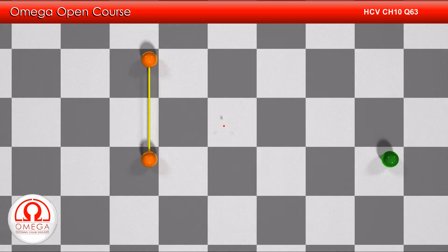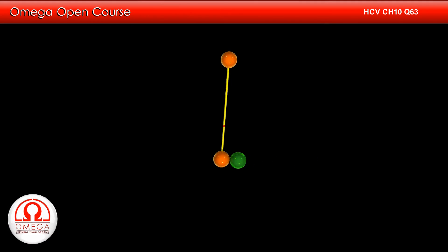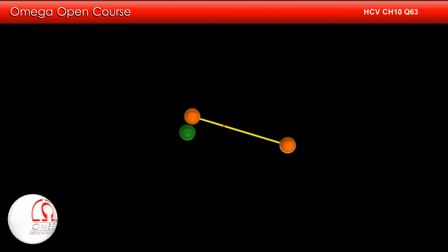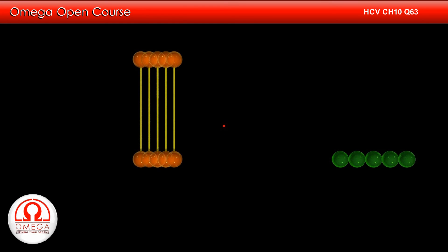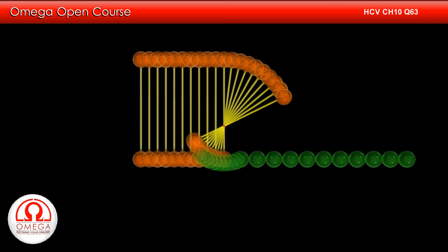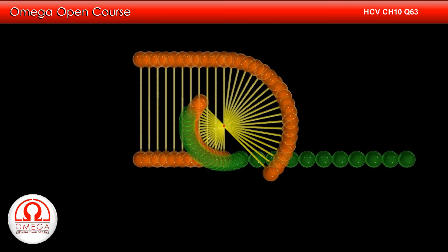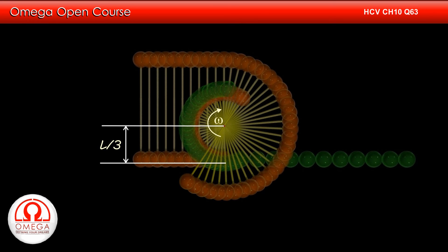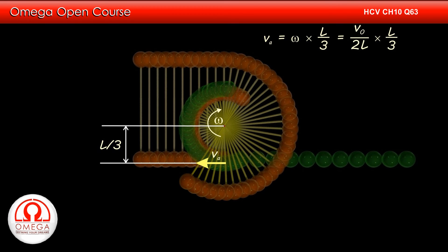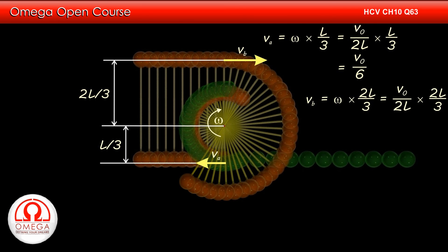If we look at the system from the frame moving with the center of mass, the system will appear to be in pure rotation about the center of mass with angular speed V0/2L. Since A is at distance L/3 from the center of mass, its speed just after the collision is omega × L/3 = V0/6 in the backward direction. Similarly, the speed of B is V0/2L × 2L/3 = V0/3 in the forward direction.